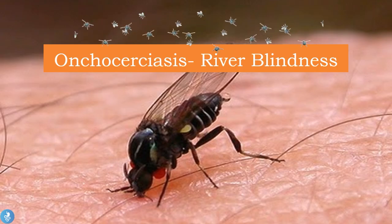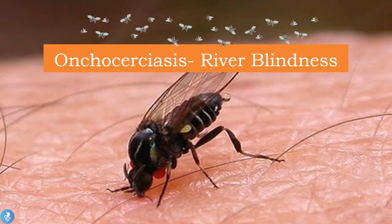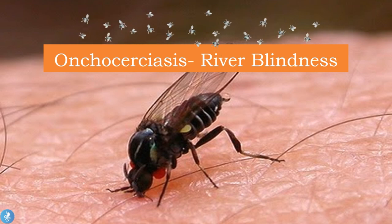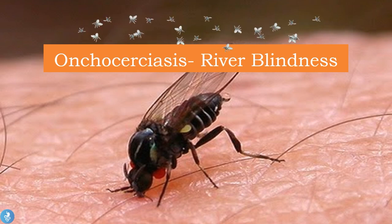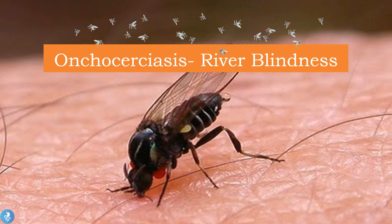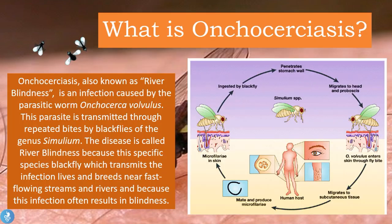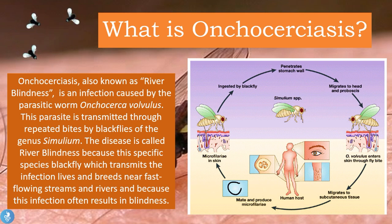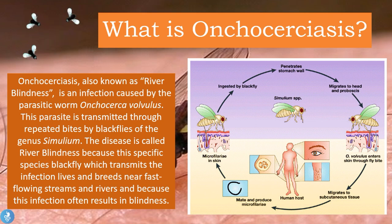Hey guys and welcome to HariGastro. In today's video we're going to be talking about a very interesting topic and that is Onchocerciasis, which is also commonly known as River Blindness. Onchocerciasis is an infection caused by the parasitic worm called Onchocerca volvulus.